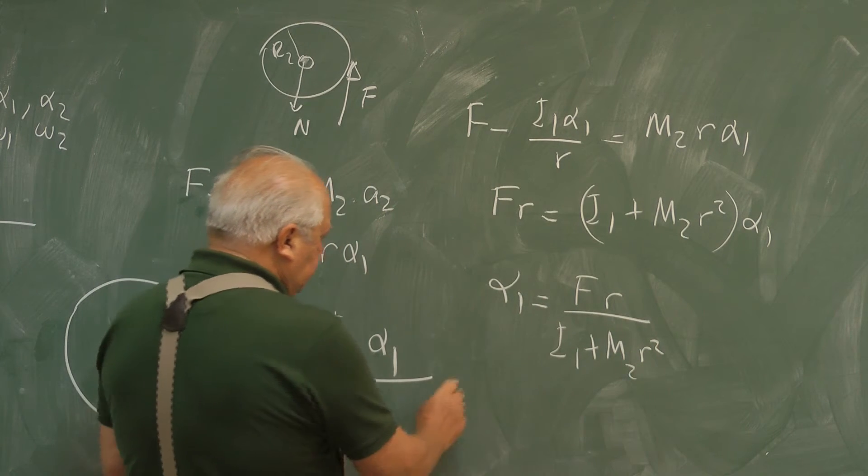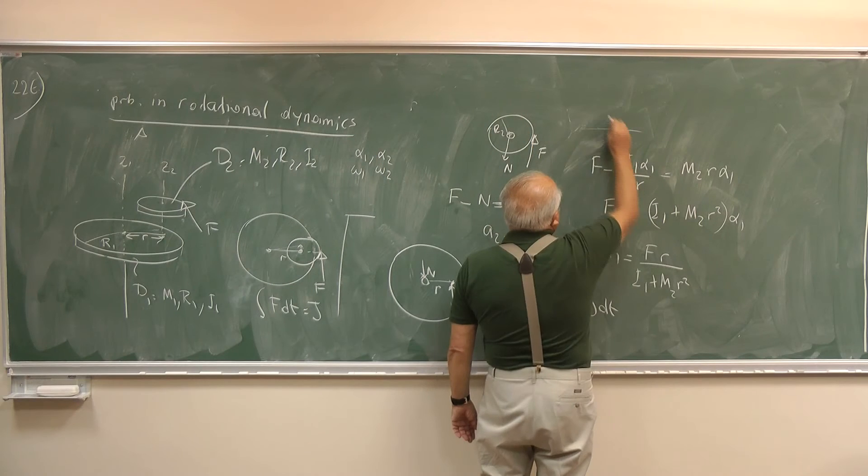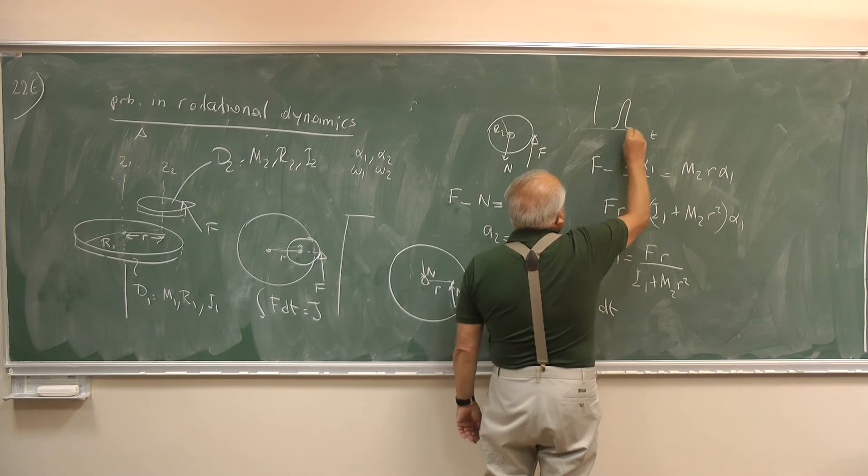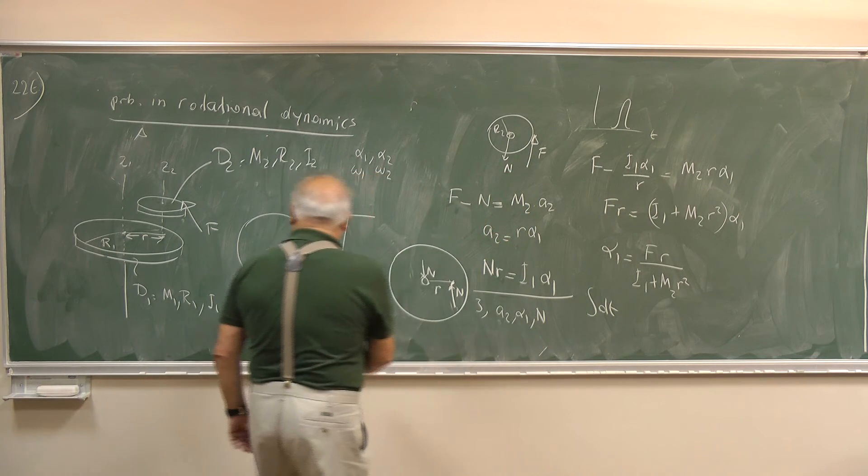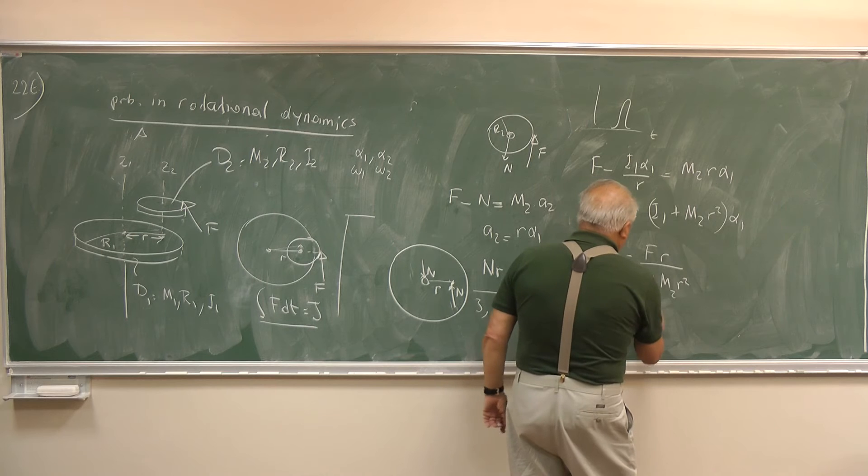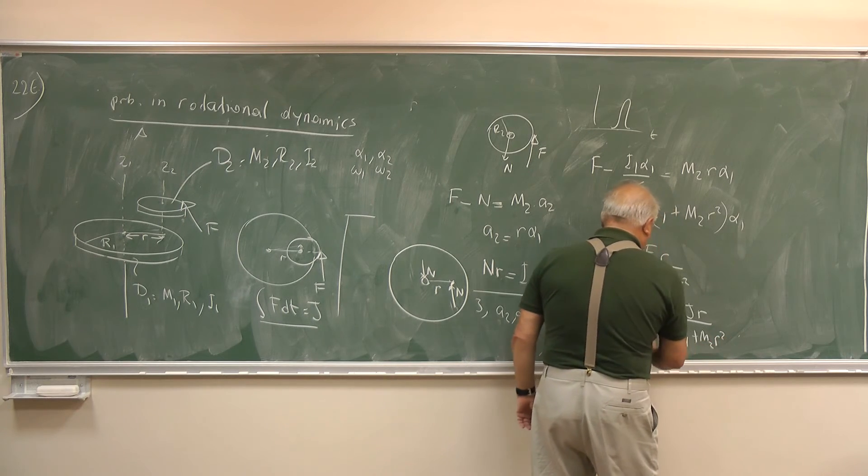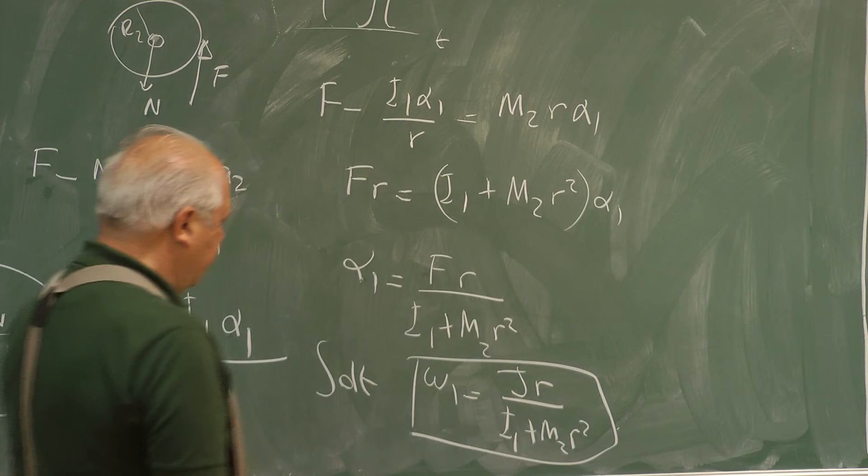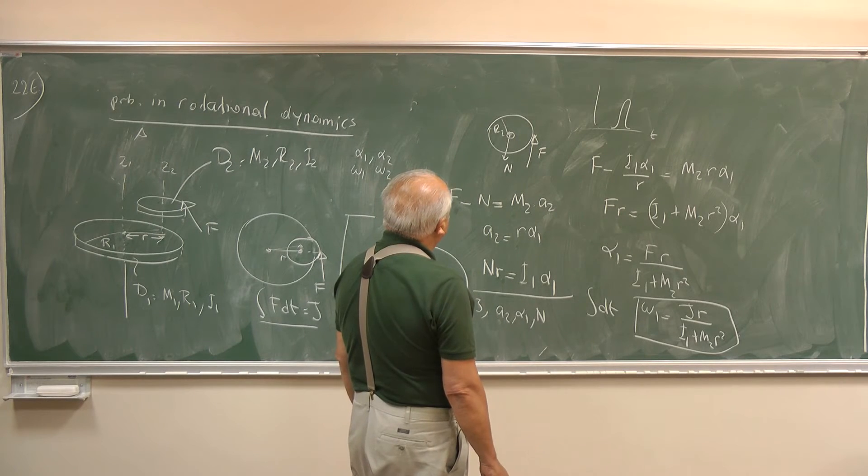And if we apply a time integral to this, because force, this force is, this time is very short, and its time integral is J here. So if we apply this thing to that equation, then ω1 is equal to JR over I1 plus M2 R2.